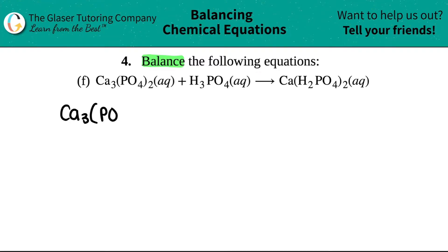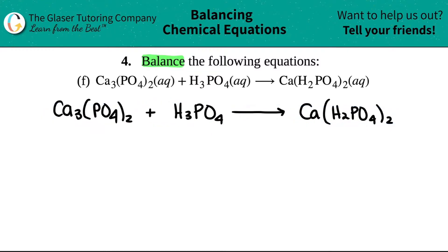So we have Ca₃(PO₄)₂ plus H₃PO₄ and that will equal Ca(H₂PO₄)₂. Like always, we love to do the chart. Let me center this. So let's write out that chart. It's a two-tiered chart.